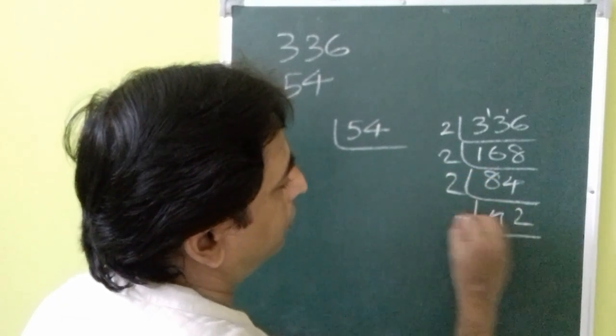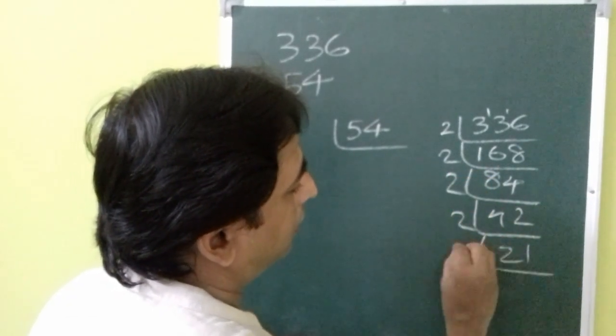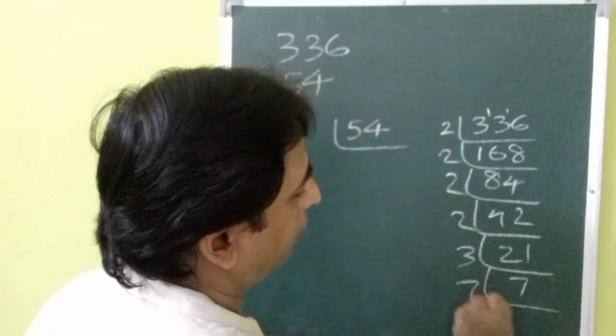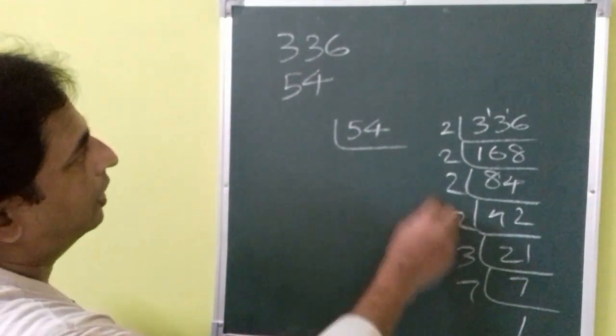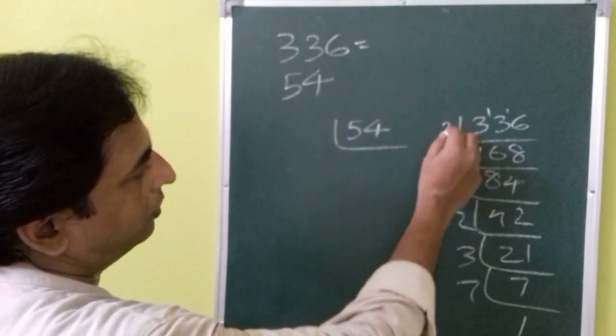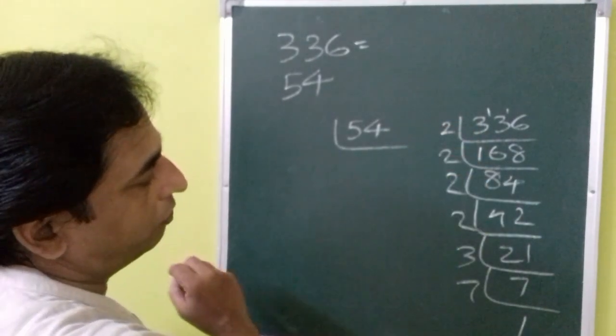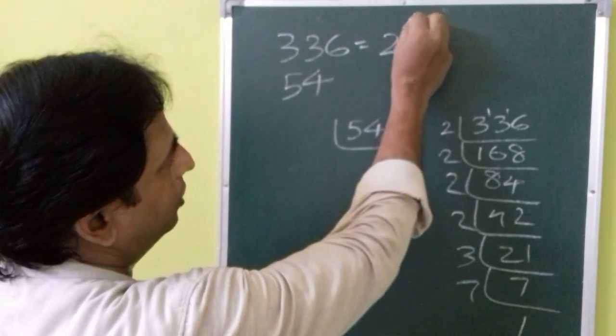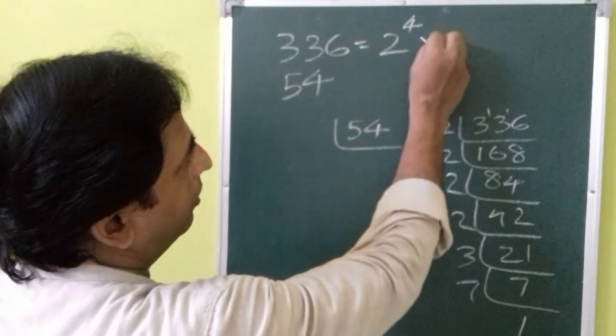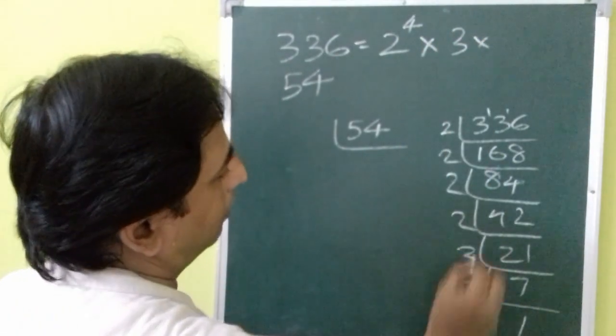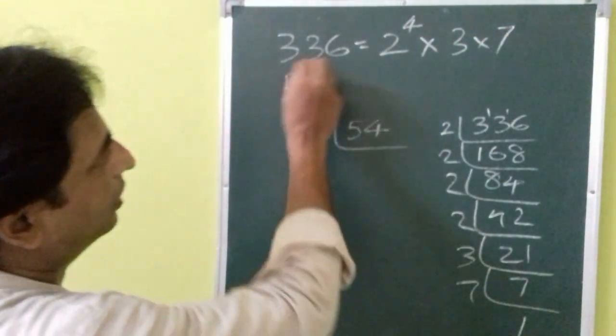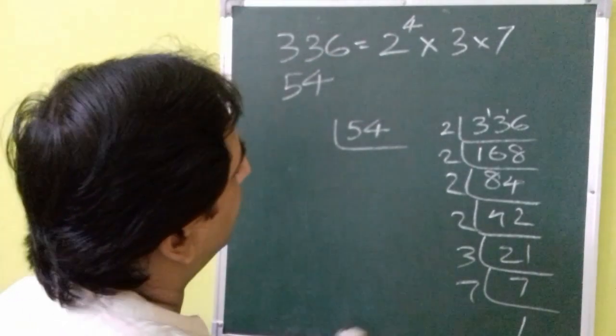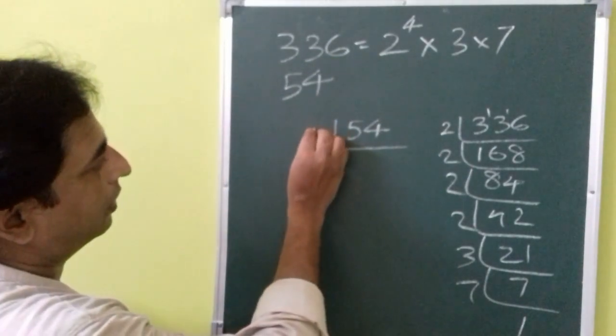So that means we can write 336 is equal to 2 raised to the power 4 times 3 times 7. And 54 is going to be factored again divided by 2.